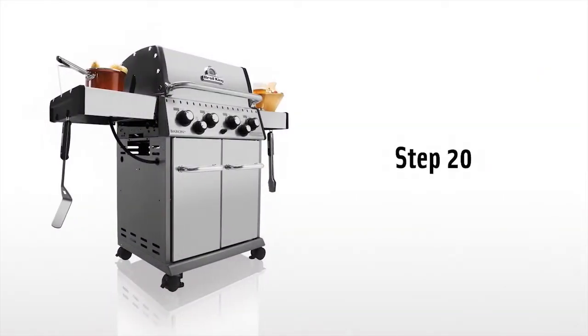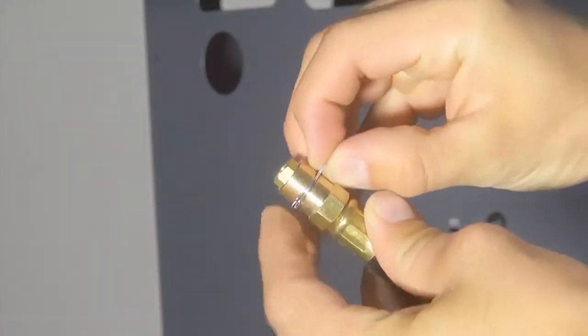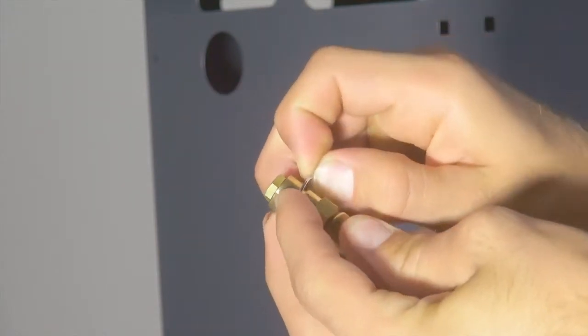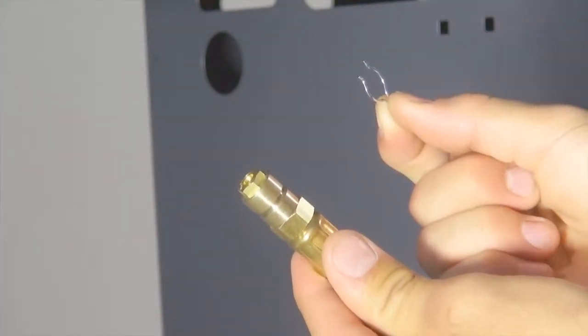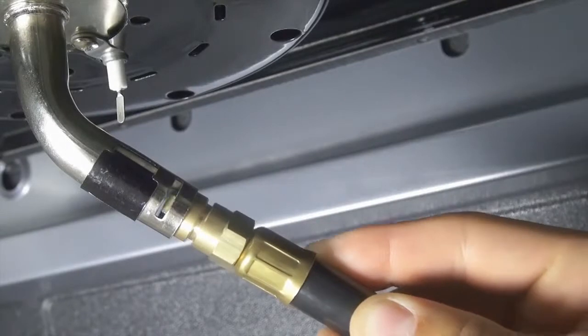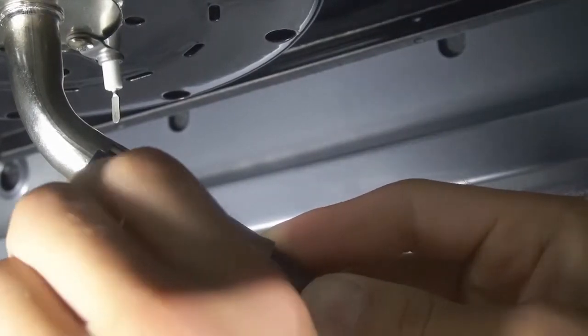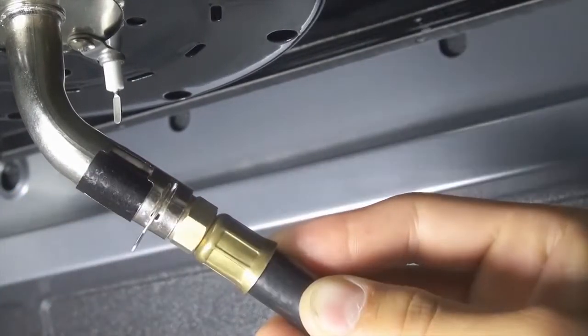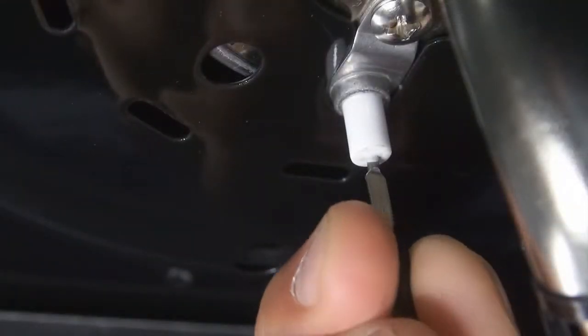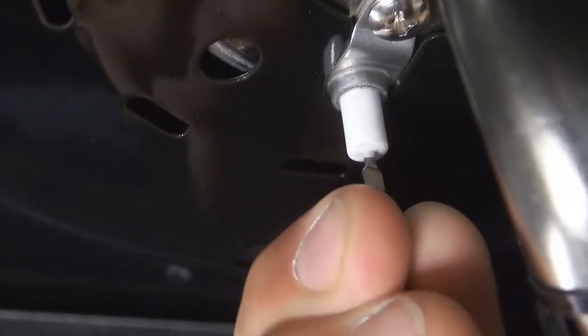Step 20. Install the side burner hose by removing the horseshoe clip from the hose, then insert the hose into the burner tube and replace the horseshoe clip. Now attach the electrode wire to the side burner igniter.